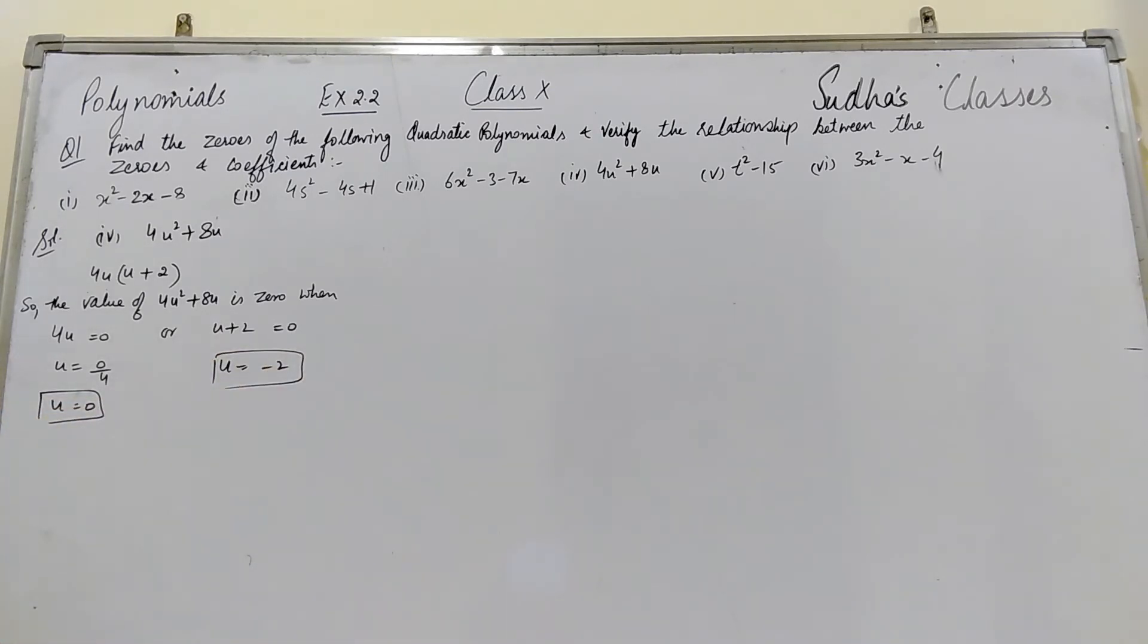Alpha = 0 and beta = -2. Now we will identify the values: a = 4, b = 8, and c = 0. The second term equals 8 and the third term is 0. We will now verify.